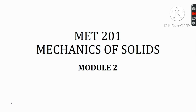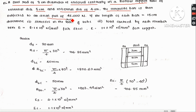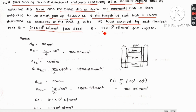Hello students, welcome to another video of Mechanics of Solids. This video will cover another composite bar problem. A steel rod of 3 cm diameter is enclosed centrally in a hollow copper tube of external diameter 5 cm and internal diameter of 4 cm. The composite bar is subjected to an axial pull of 45,000 N. If the length of each bar is equal to 15 cm, determine stresses in the rod and tube and load carried by each member. Take E equal to 2.1 × 10⁵ N/mm² for steel and E equal to 1.1 × 10⁵ N/mm² for copper.